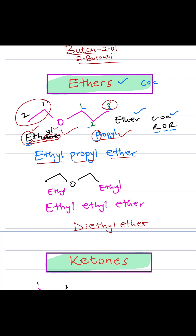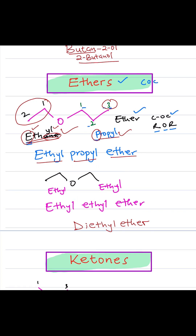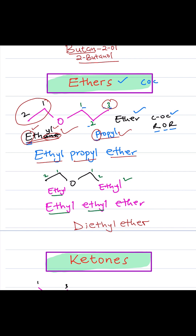In this next example, you have one alkyl group with 2 carbons — that's ethyl — and another alkyl group with 2 carbons — that's another ethyl — and we know it's an ether because there's an oxygen in between. Therefore the name becomes ethyl ethyl ether, but because there are 2 ethyls, we combine them — di — so it becomes diethyl ether.